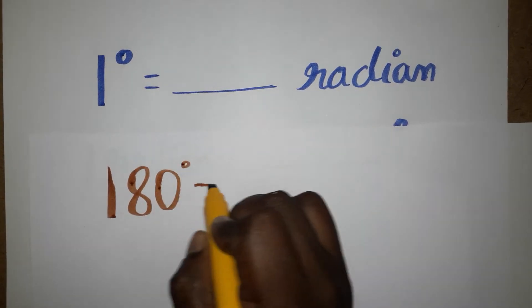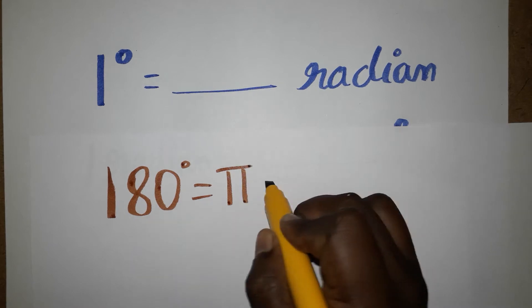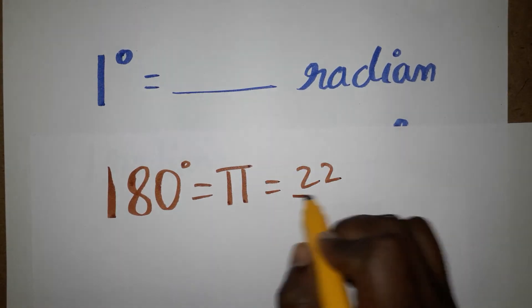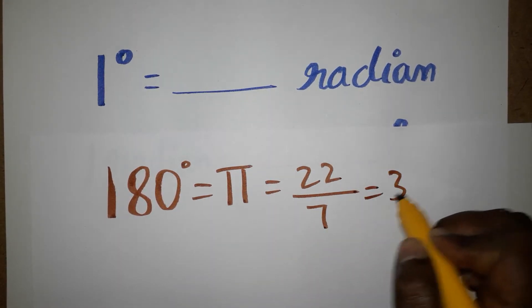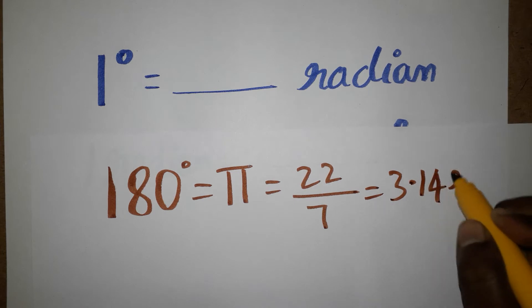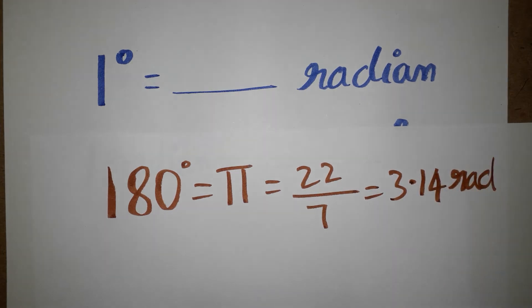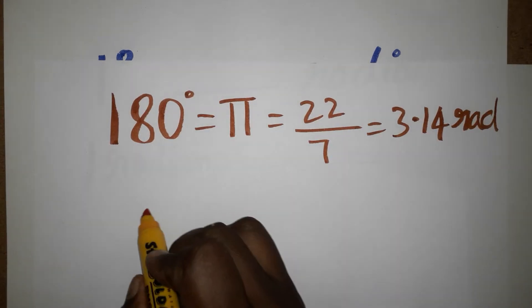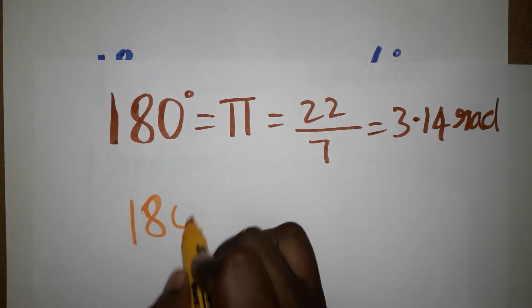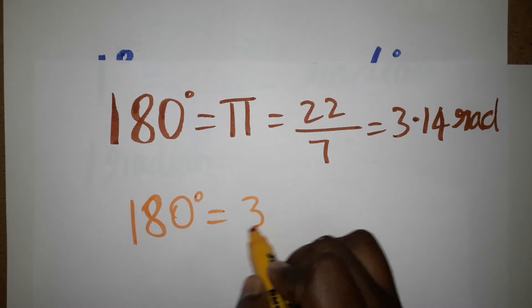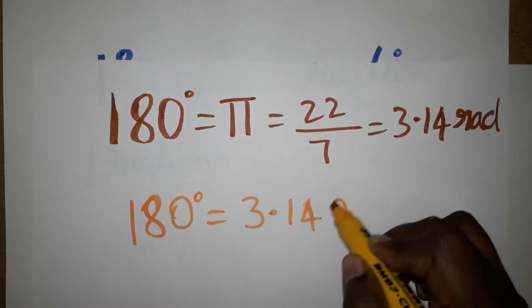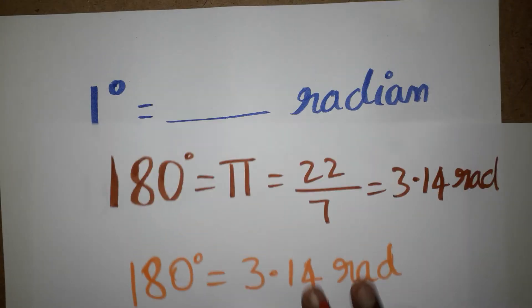π is going to be 22 by 7, which equals 3.14 radians. So 180 degrees equals 3.14 radians. Now our question is: 1 degree equals how many radians?